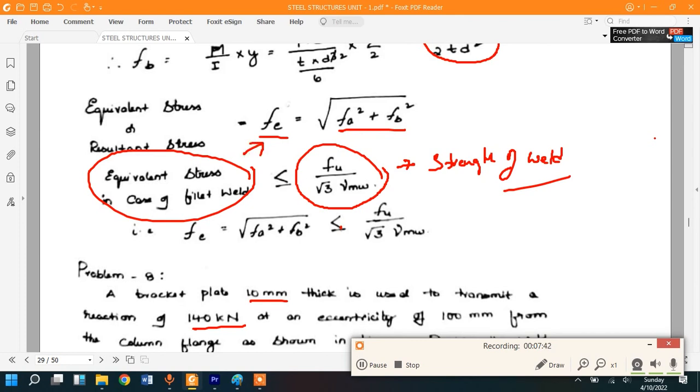But here, F_U by root 3 gamma M_W indicates the actual strength of weld. So the developed stresses have to be less than the capability or strength of the weld. What is the strength of the weld? Otherwise it is going to fail. So that is what we are going to check.